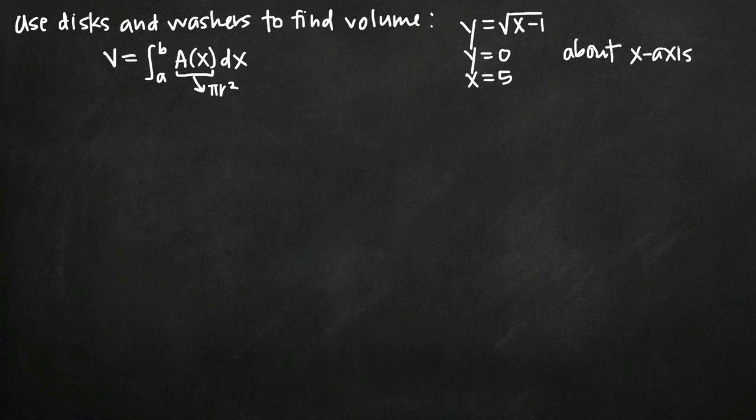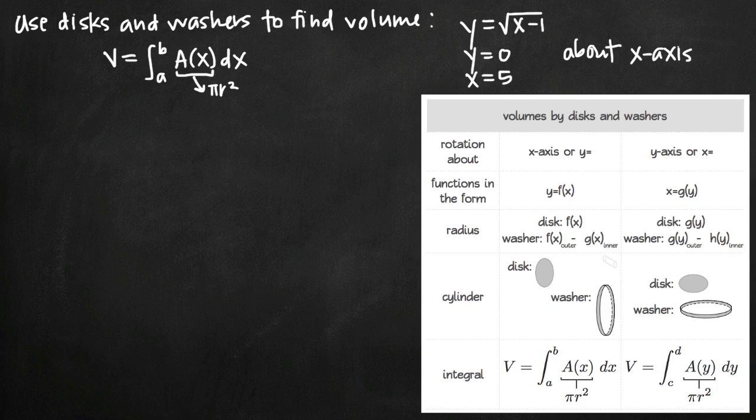We've been told to rotate that region around the x-axis and then to find the volume of that rotated region. Whenever I have a disk and washer problem, I always like to look at this chart that I have. It's on my website on my disk and washer page. The first thing you want to do is consider the axis of rotation. In our case, we're rotating around the x-axis, which puts us in the first column here.